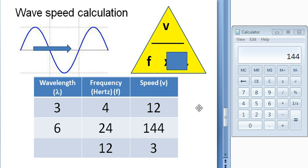And I have the calculation speed divided by frequency. Calculator to hand, speed 3 meters per second divided by frequency of 12 waves per second, and I have a wavelength of 0.25 meters. I'll pop that in.